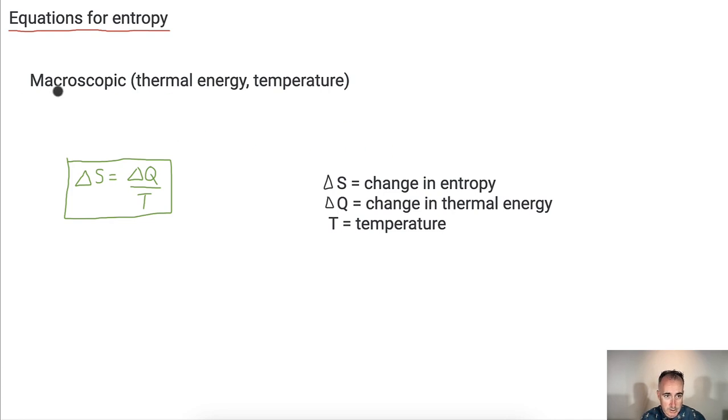So, what are the units? Well, change in entropy, we'll have to look at this in a second here. Change in thermal energy, thermal energy is in joules. Temperature should be in Kelvin. So, what's the units for entropy then? Should be in joules per Kelvin. You don't have to memorize all the units. Sometimes you just figure them out based on the formula.